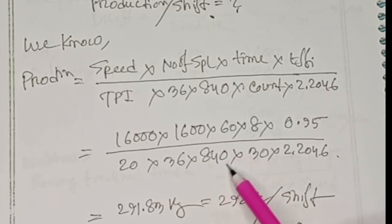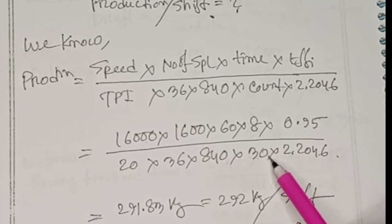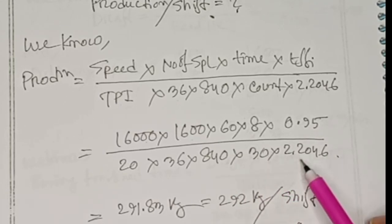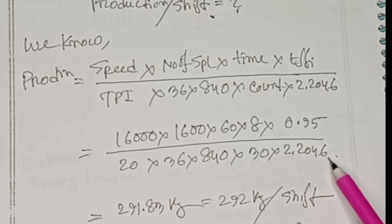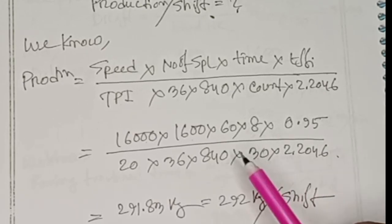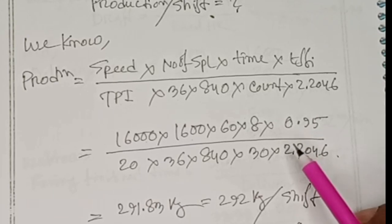Then count, then 2.2046. So this is the formula for ring machine production calculation.